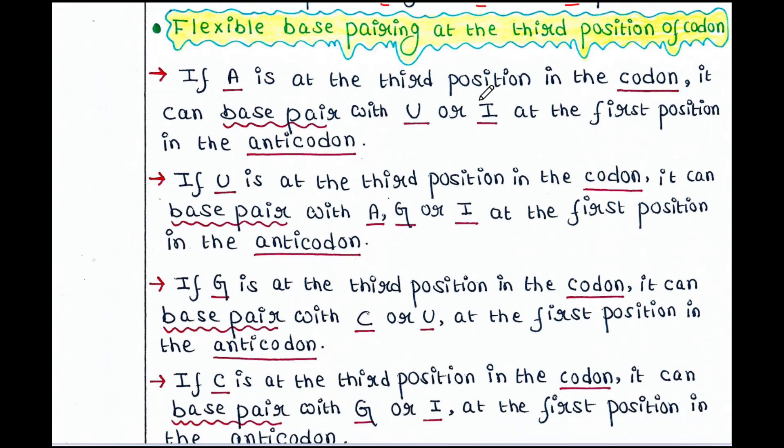Let's see the flexible base pairing at the third position of codon. So, if A is at the third position in the codon, it can base pair with U or I at the first position in the anticodon. So, A pairs with U that is usual. But A pairs with I that is unusual. That is wobble base pairing.